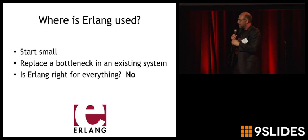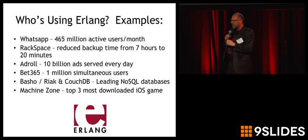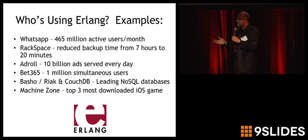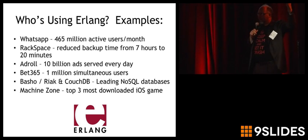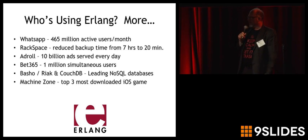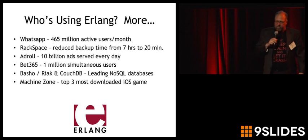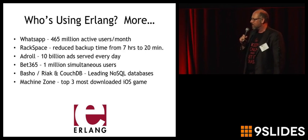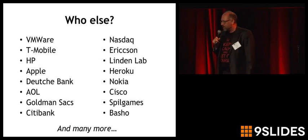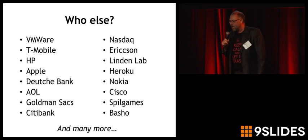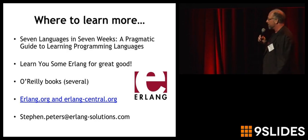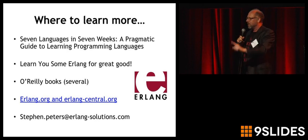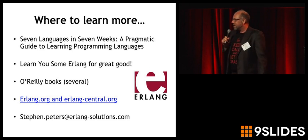Where are people using Erlang today? Typically you've got a company, you've got a legacy system — Java, Python — and maybe a piece of it is not able to keep up with your web traffic. People look at things like Erlang to replace that bottleneck and speed things up. Who's heard of WhatsApp? Their entire system is written in Erlang and they have 465 million active users per month. Rackspace replaced a Ruby app with Erlang and reduced their backup time from 7 hours to just 20 minutes. AdRoll serves 10 billion ads every day on their Erlang system. Machine Zone is one of the top three most downloaded iOS apps and all of their backend is in Erlang. There are a few other companies on this list using Erlang. While you may never have heard of it, you may have been using it all day today because it's behind the scenes at a lot of companies.